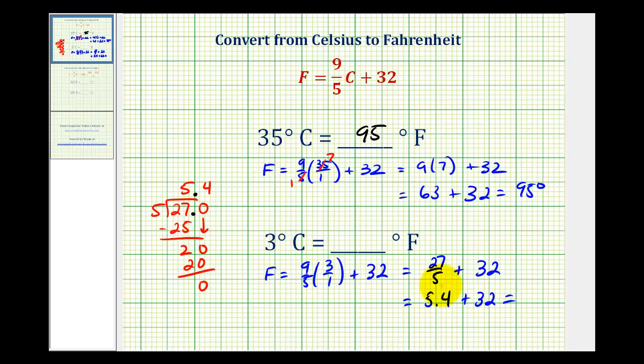So three degrees Celsius would be equal to 37.4 degrees in Fahrenheit. Next, we'll take a look at converting Fahrenheit to Celsius. I hope this was helpful.